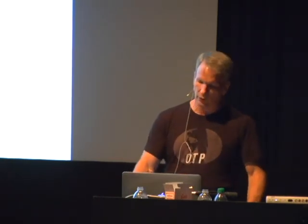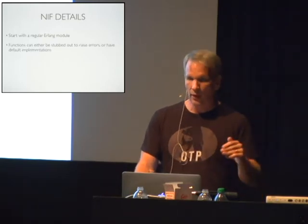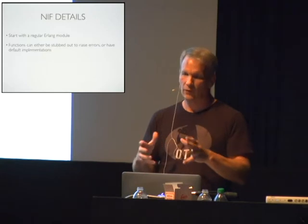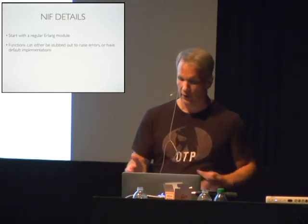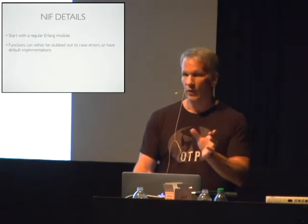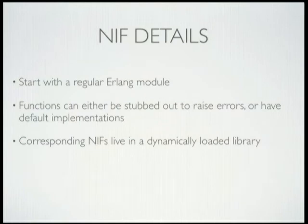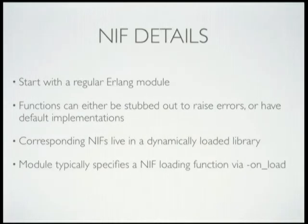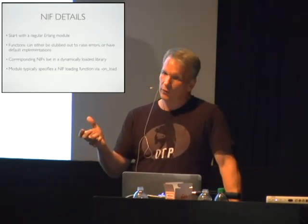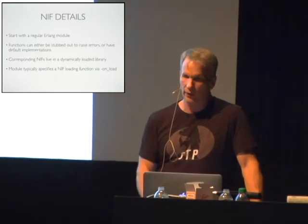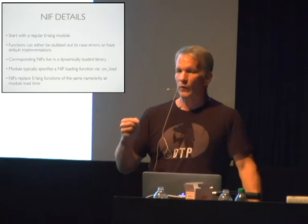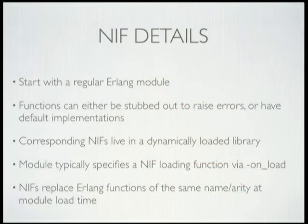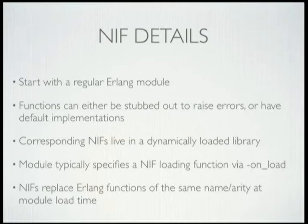In terms of NIFs, the way it works is you start with a regular module and regular functions. You can provide default bodies for the functions that will run if they're not overwritten by the NIF, or you can just stub the function out and have it raise an error. The NIFs themselves are native functions — typically C or C++ — that live in a shared library. The module specifies an onload directive, and that function loads the NIF. When the NIF loads, the runtime goes through the NIF looking at a table of function pointers, names, and arities, and replaces the functions in your compiled module with new instructions that go off to execute these NIFs.